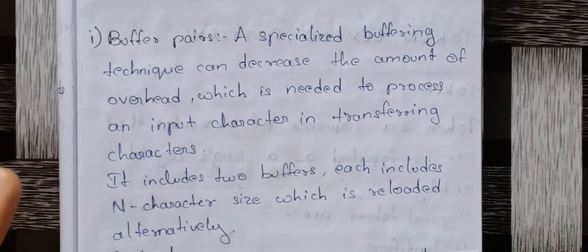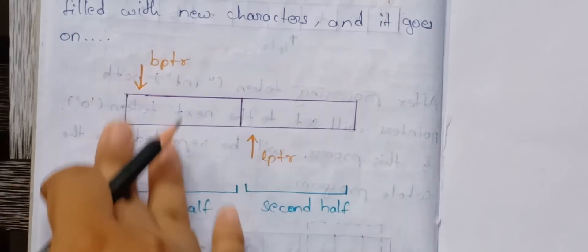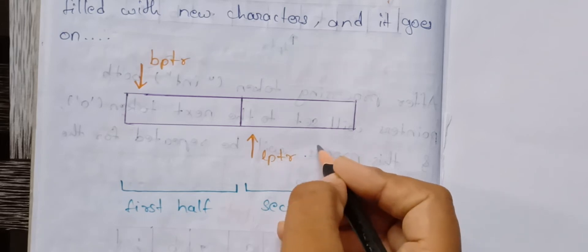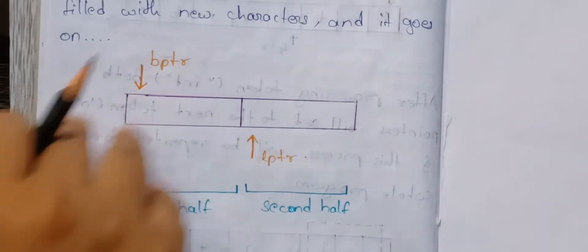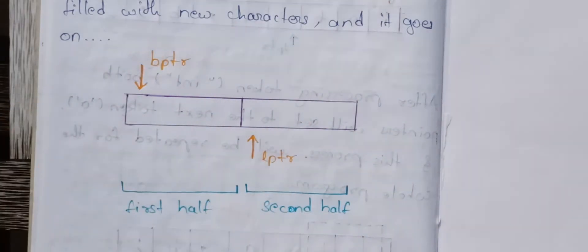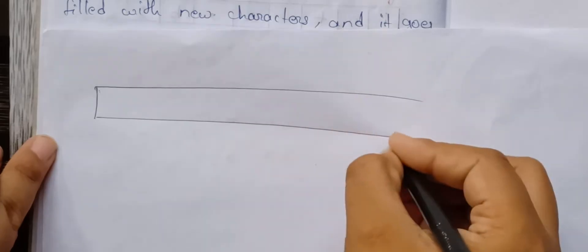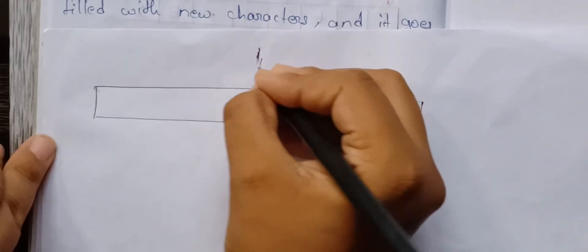So, this first technique has two pointers: the first is the beginning pointer, and then the look-ahead pointer. This is a buffer divided into two halves, shown with dotted lines.